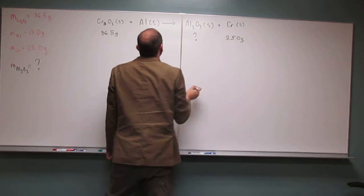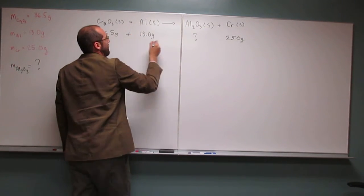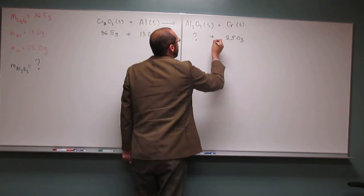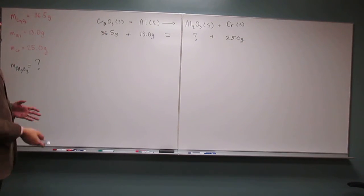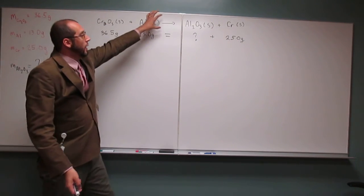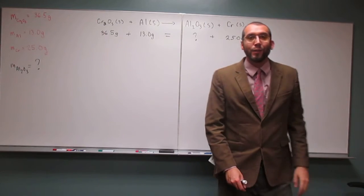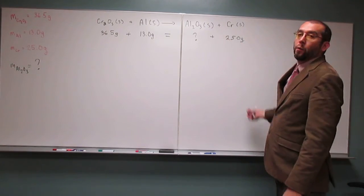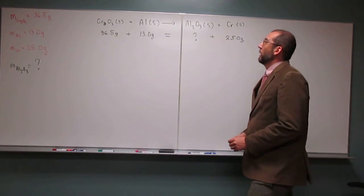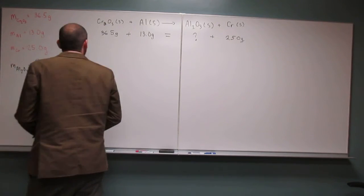So this is just like an algebraic equation. This plus this equals this plus this. We could have called this A, B, C, and D. We didn't need to actually identify what the formulas for those species were.